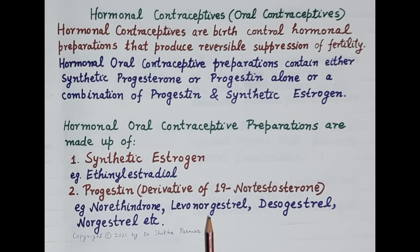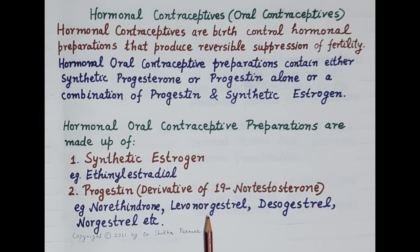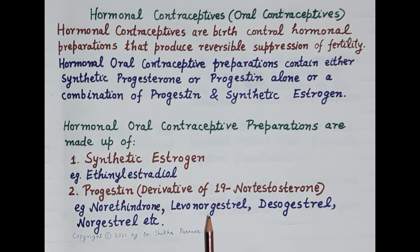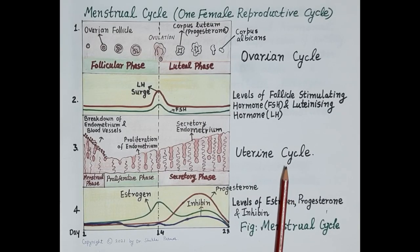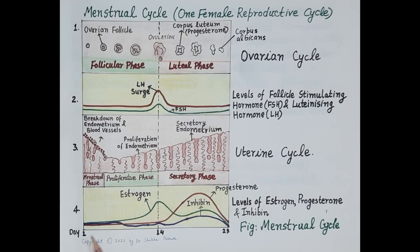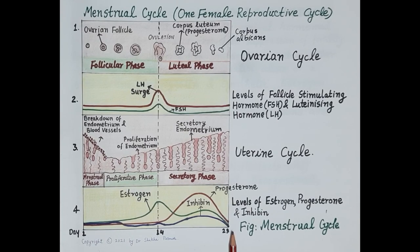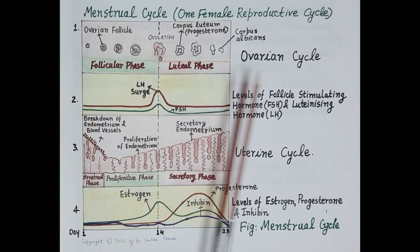In order to understand the mechanism of action of hormonal oral contraceptive pills, it is essential to review the concept of the menstrual cycle or reproductive cycle. One reproductive cycle is of 28 days, starting from day 1 to day 28.